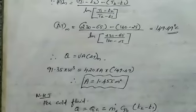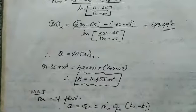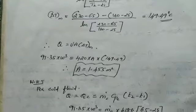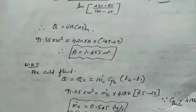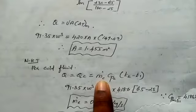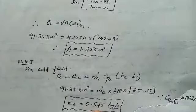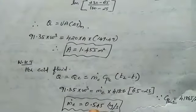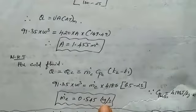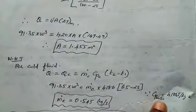The surface area A = 1.455 m². Then from QC = QH, we solve for mass flow rate of cold fluid mC = 0.545 kg per second. CP of water = 4186 J per kg Kelvin.